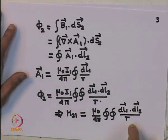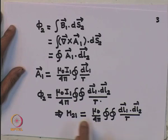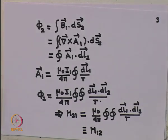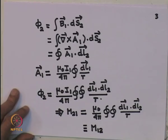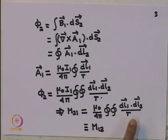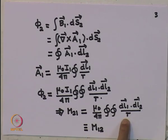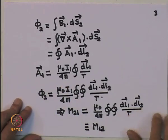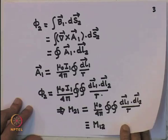This expression is symmetric in 1 and 2, since R is actually R₁₂. Therefore this is identical to what you would get for M₁₂, establishing that M₁₂ equals M₂₁. This is known as Neumann's formula. Neumann's formula establishes that the mutual inductance depends only on geometry and relative position, and that mutual inductance is symmetric in the indices of the loops.